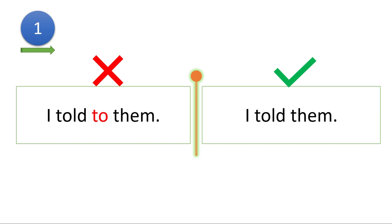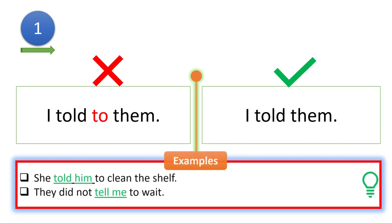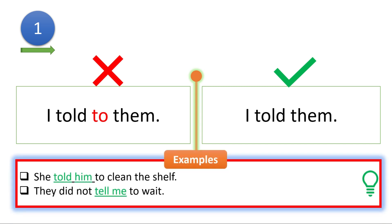Here are a few examples to understand this. 'She told him to clean the shelf.' 'They did not tell me to wait.' See here — I haven't used 'to' after 'told,' and I haven't used 'to' after 'tell' here.